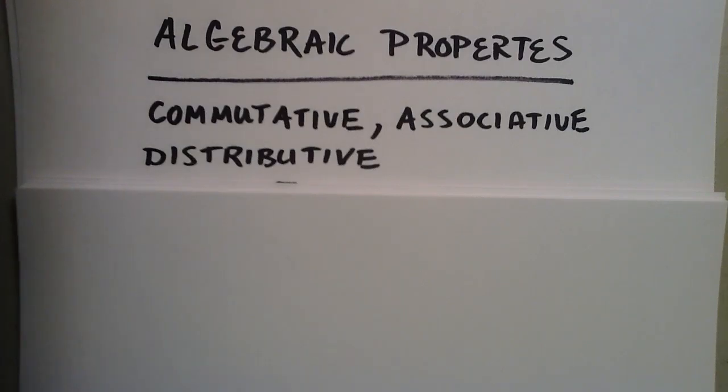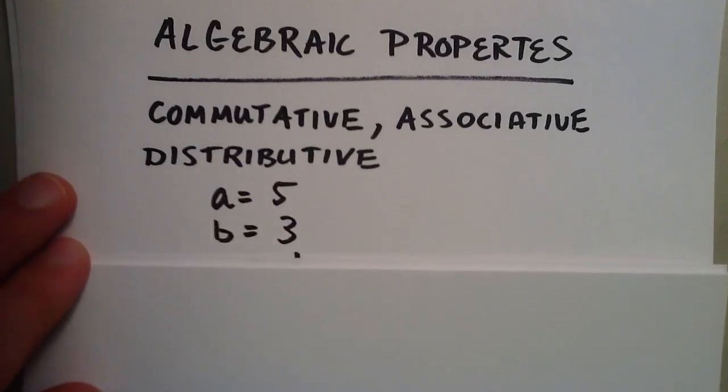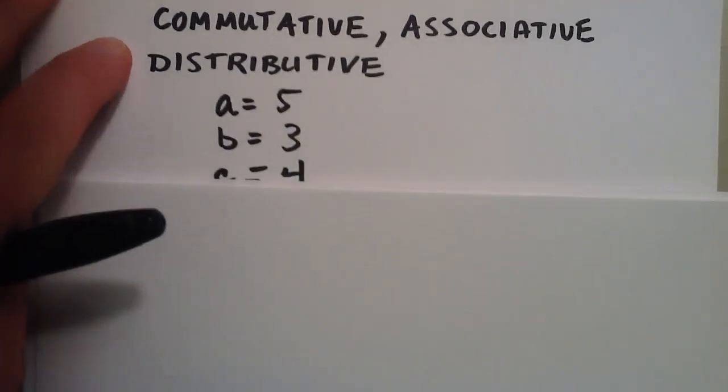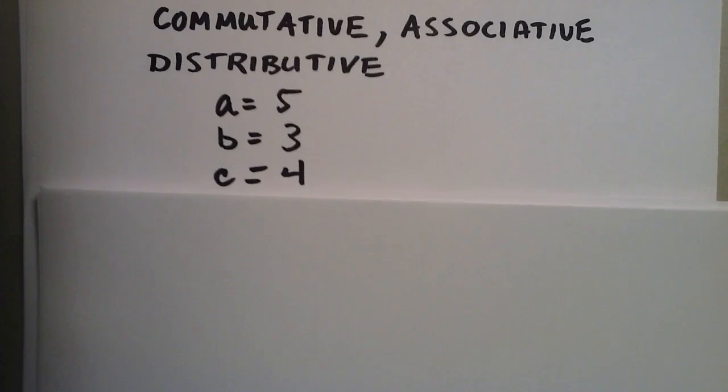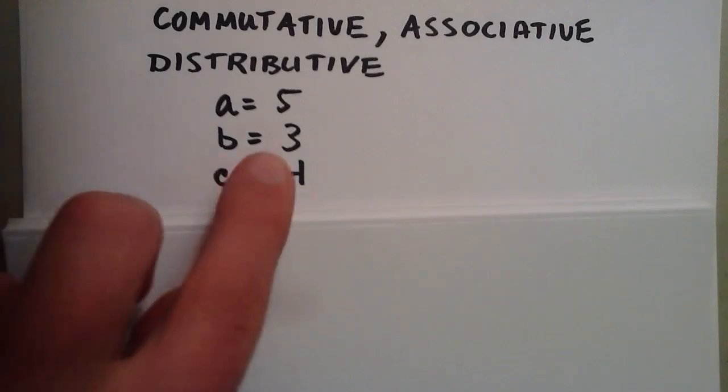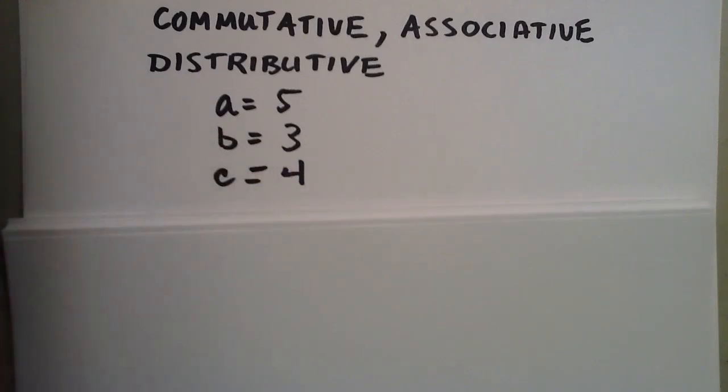Now, the commutative property is fairly simple, so I've gone ahead and already written that out here. But first of all, I wanted to illustrate all of my examples, and I'm going to be using the letters A, B, and C to demonstrate the properties, and then the values 5, 3, and 4 just to give an example of how they work. So you can choose your own numbers later on, you'll see what I'm doing with these in just a moment.